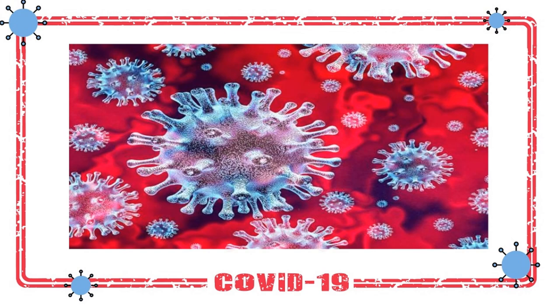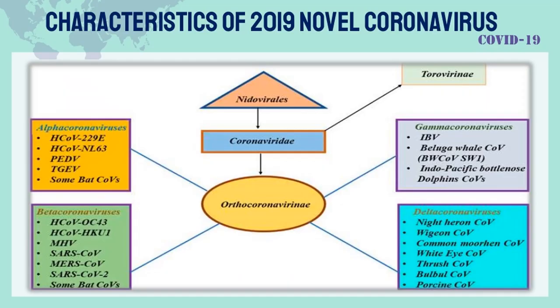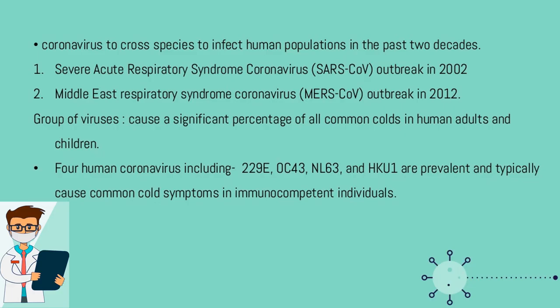About COVID-19: The 2019 novel coronavirus has characteristics that include crossing species to infect human populations. In the past two decades, coronaviruses have caused major outbreaks: Severe Acute Respiratory Syndrome Coronavirus (SARS-CoV) outbreak in 2002, and Middle East Respiratory Syndrome Coronavirus (MERS-CoV) outbreak in 2012. There is also a group of viruses that cause a significant percentage of all common colds in human adults and children.